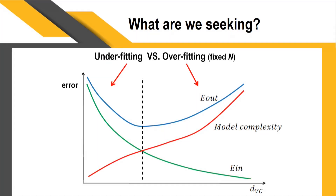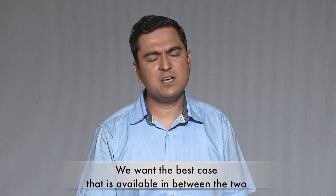After training and testing, we assess whether the system is working correctly. If there is low bias and high variance, it results in overfitting — the system has memorized all training inputs and performs well on that data, but may fail in the real environment. Underfitting means the system cannot predict the hidden pattern in the data. Both overfitting and underfitting are undesirable — we want the best balance between the two.